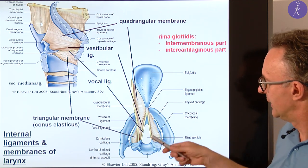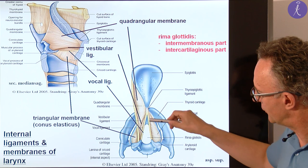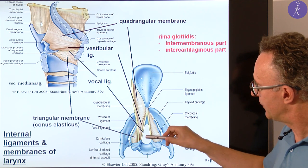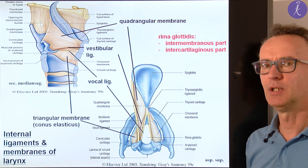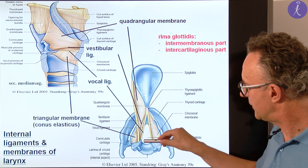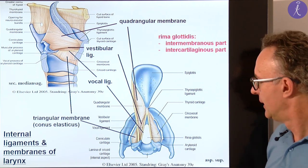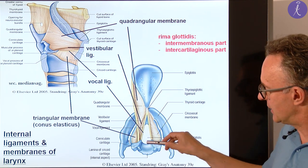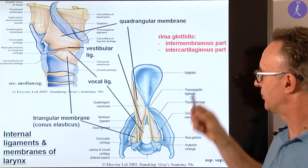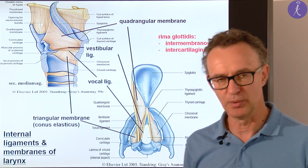If we watch from above, we see the shape of the gap between the two true vocal folds. The true vocal folds form a small elongated triangle, and the gap between them is called the rima glottidis or simply the glottis. It has two parts: the anterior part between the two true vocal ligaments — the elongated triangle — is the intermembranous part, but it extends backward in a small rectangle between the two arytenoid cartilages, which is the intercartilaginous part. We use different muscles for the adduction of these two parts of the rima glottidis.